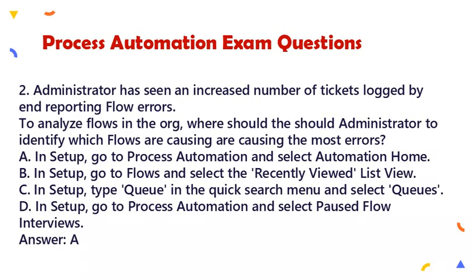Question 2: An administrator has seen an increased number of tickets logged by end users reporting flow errors. To analyze flows in the org, where should the administrator go to identify which flows are causing the most errors? a. In Setup, go to Process Automation and select Automation Home. b. In Setup, go to Flows and select the Recently Viewed List View. c. In Setup, type Queue in the Quick Search menu and select Queues. d. In Setup, go to Process Automation and select Paused Flow Interviews. Answer: a.